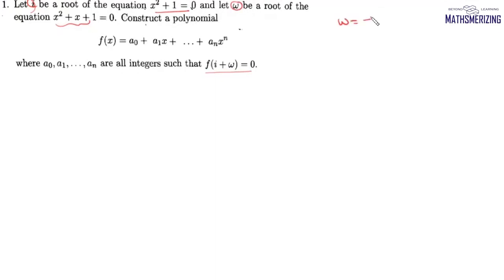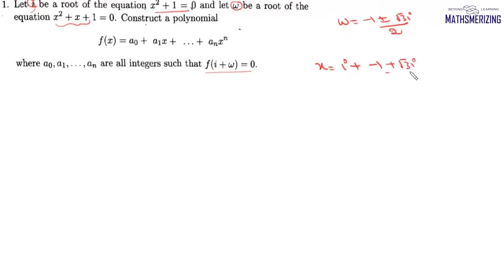We can take omega as (-1 ± √3·iota) / 2. We need to construct a polynomial whose root is iota + omega. So we write x = iota + (-1 + √3·iota) / 2, taking the plus sign — we'll end up getting the same polynomial either way. We can rewrite this as x = (-1 + 2 + √3·iota) / 2.